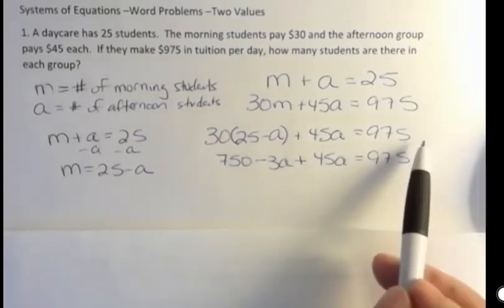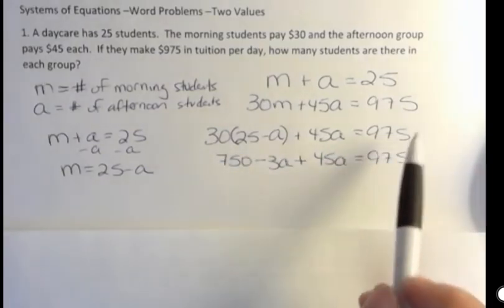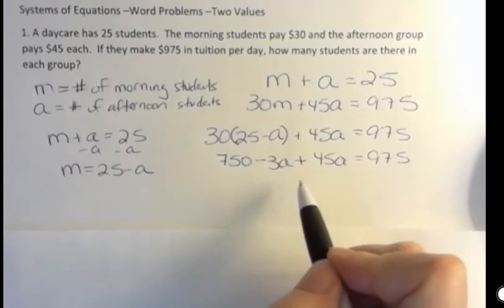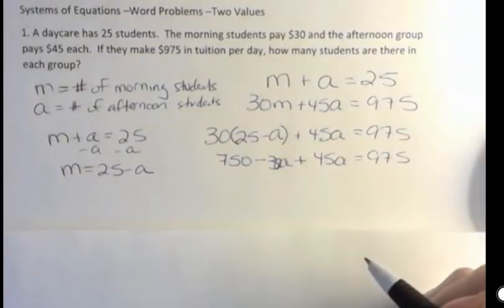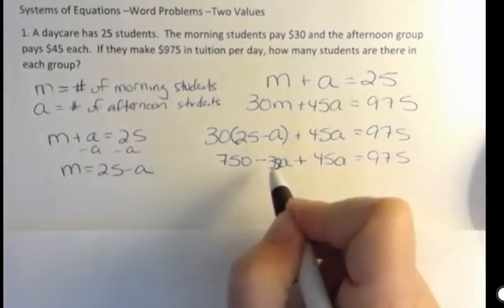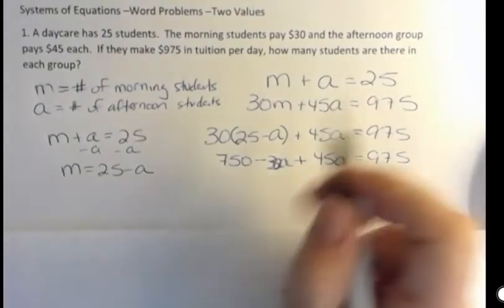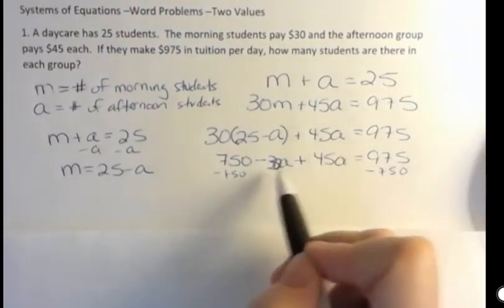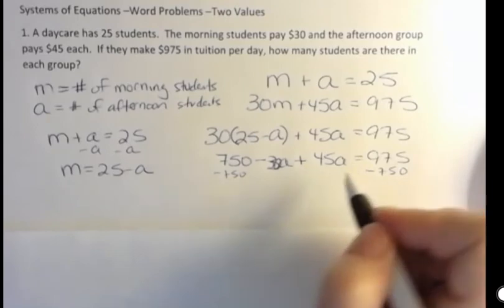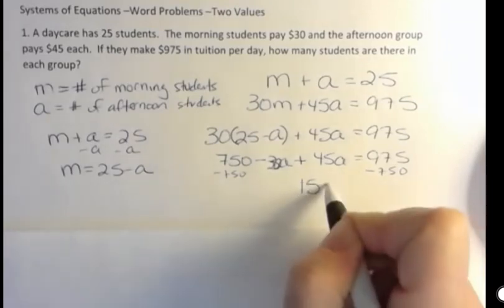Notice this equation now only has A in it. So I can solve for the A, which is my afternoon students. So I have, this is actually 30A. You saw that little zero was missing in there. I'm going to subtract 750 from both sides and I'm going to combine negative 30 and positive 45 to get 15A.